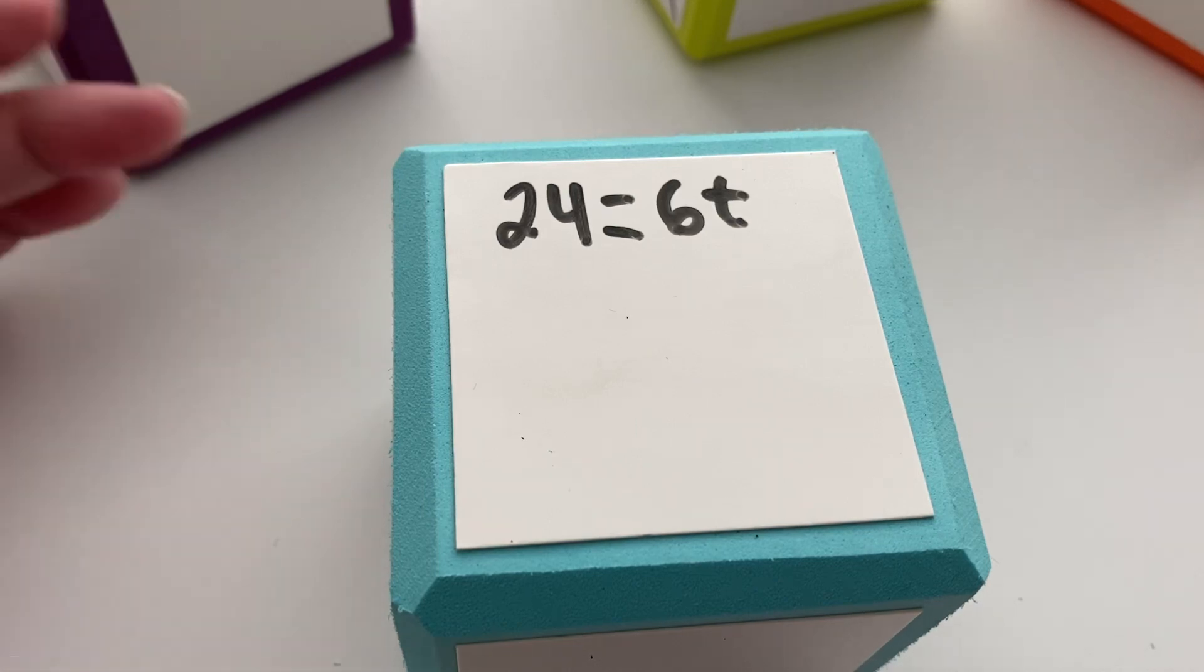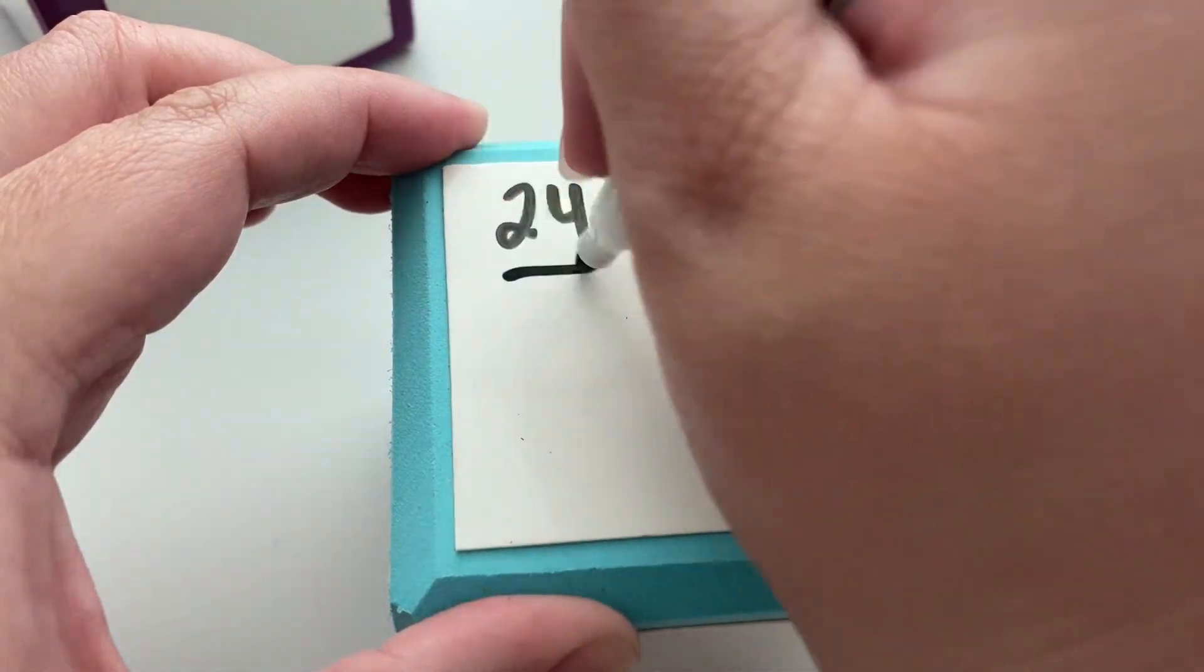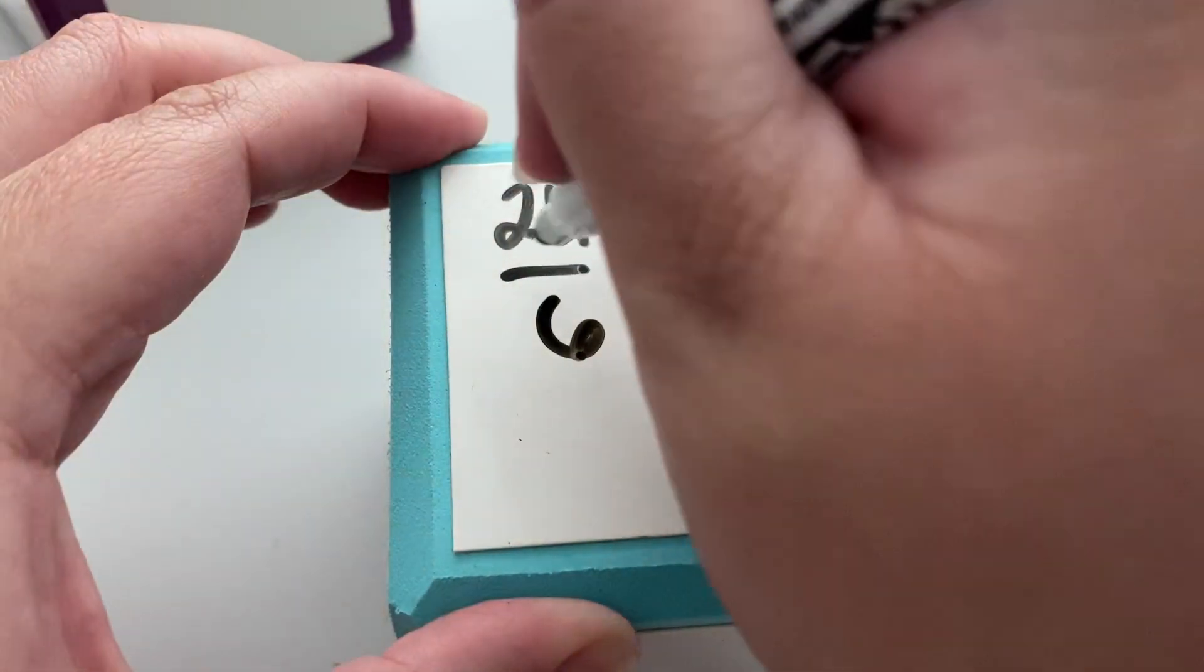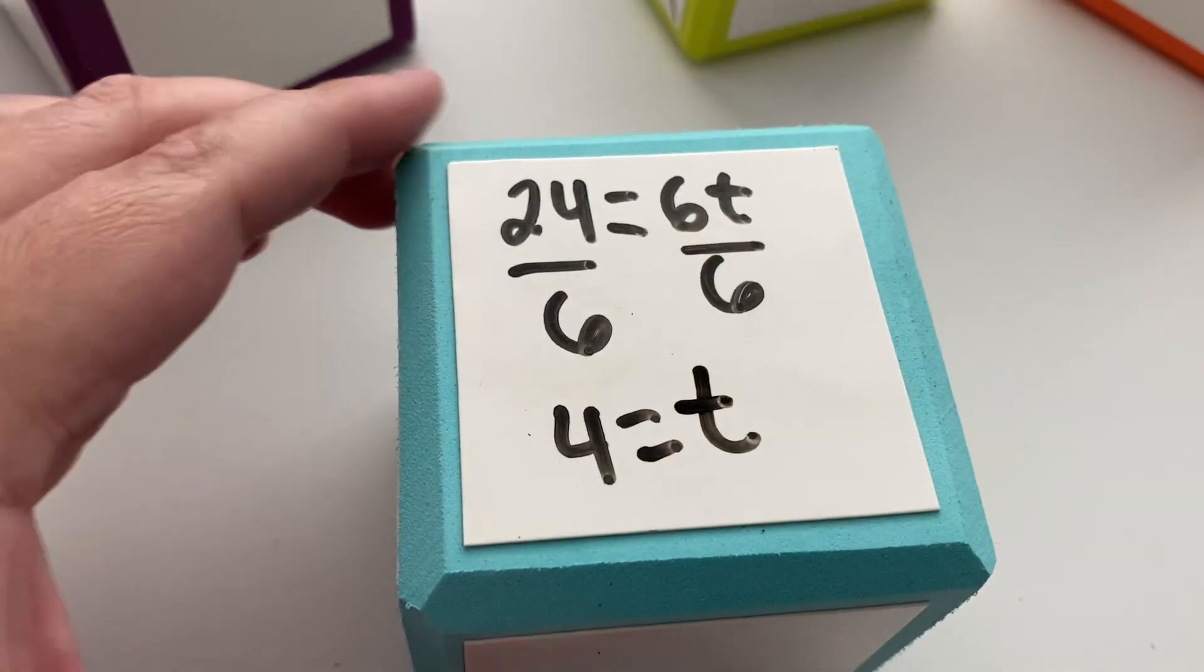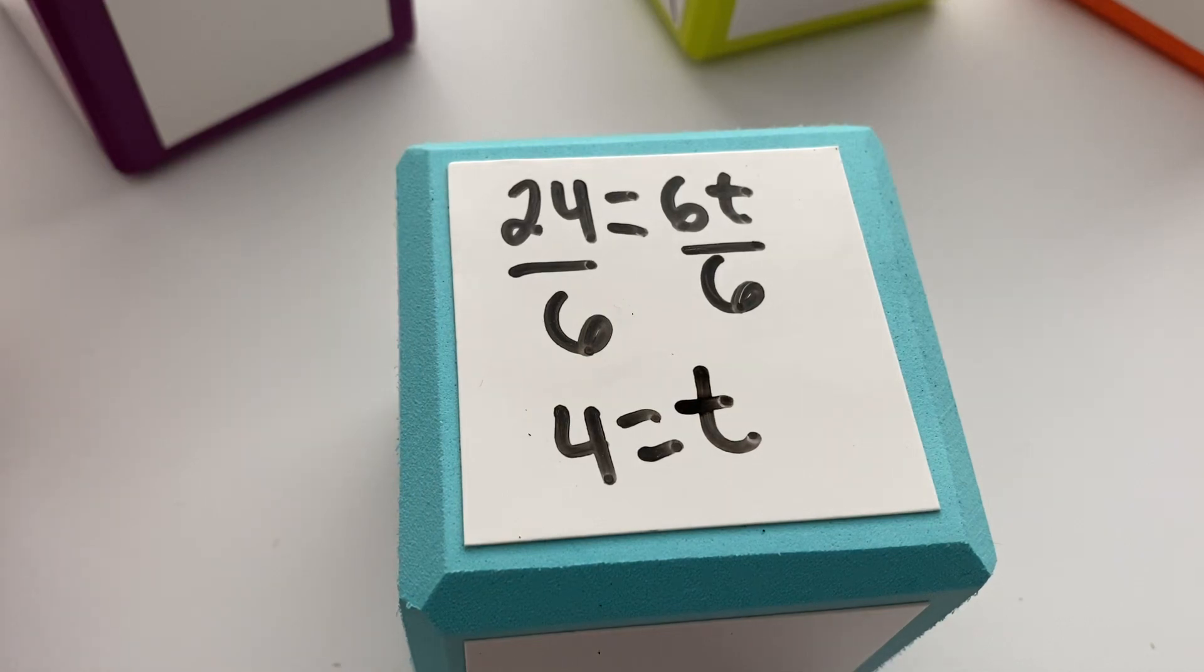Sometimes the variable can be on the other side—not a problem. We still do the same things. The number next to the variable is six, which is what we're trying to move. This is six times t, so we'll divide both sides by six. Twenty-four divided by six is four; six divided by six is one. So we get four equals t, or t equals four.